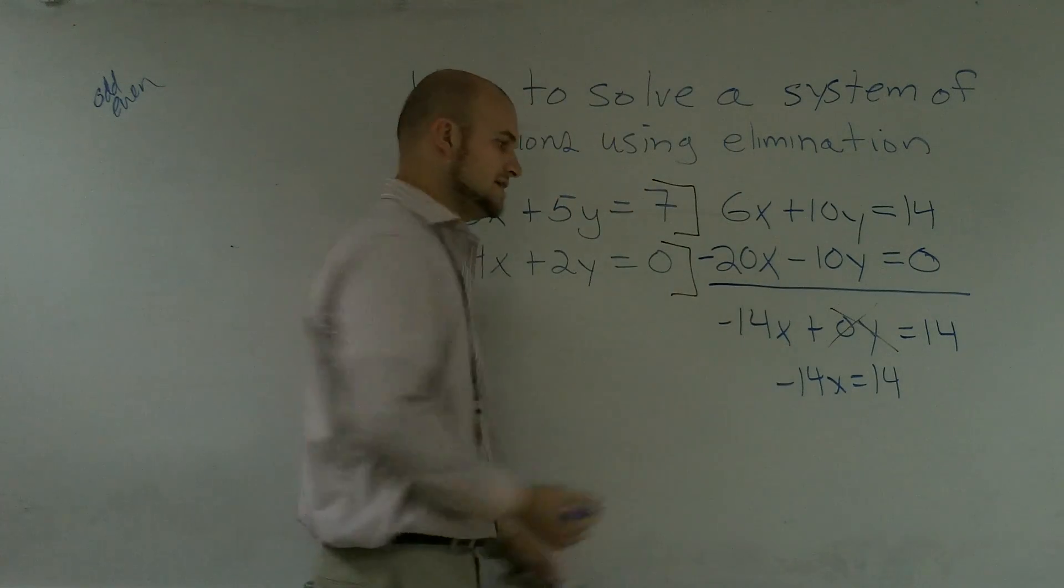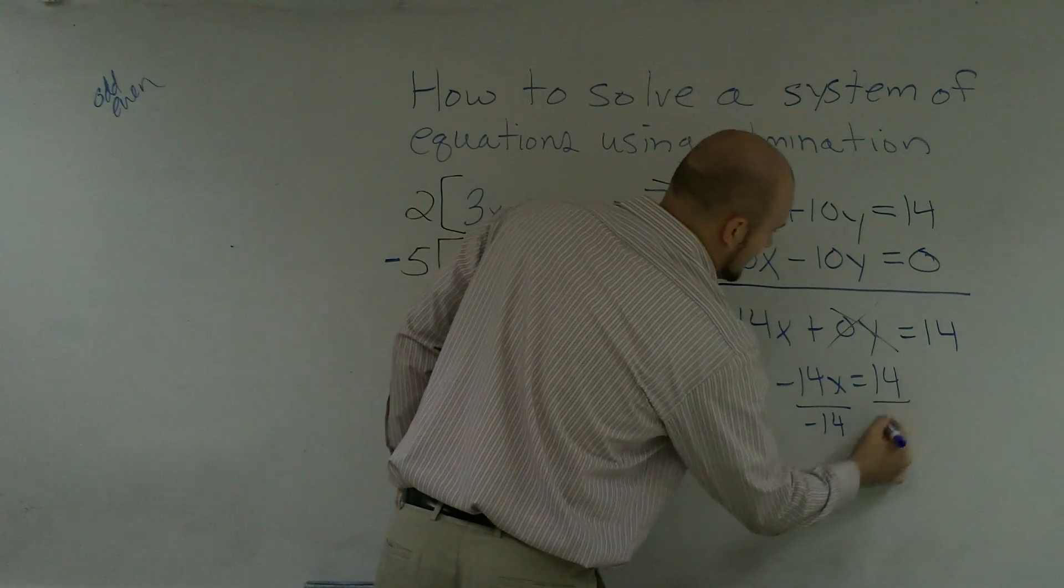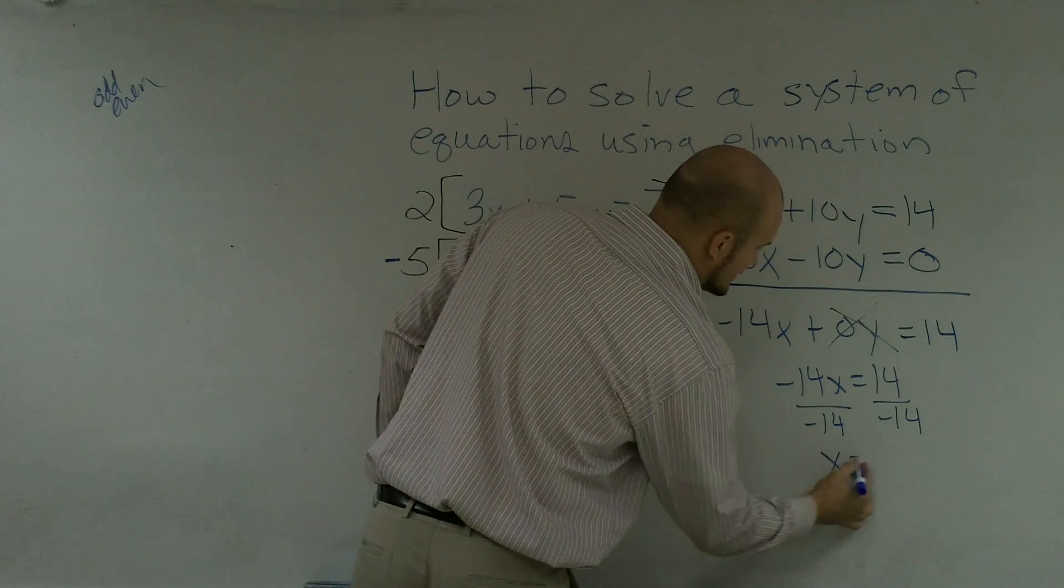Now we're given a one-step equation, which to solve for x, I divide negative 14 on both sides. Then x equals negative 1.